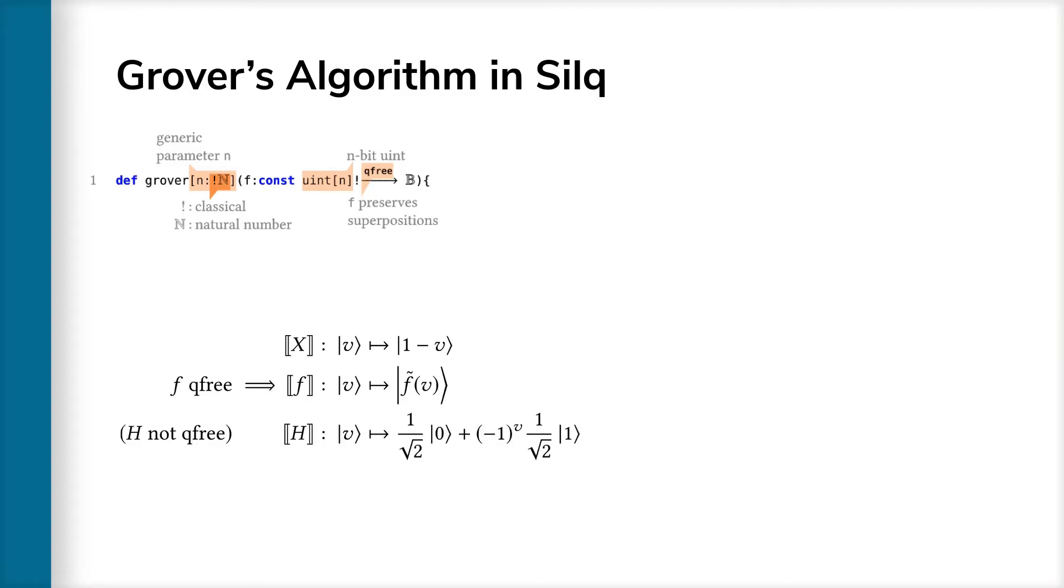As an example of a non-q-free function, we quickly show the Hadamard operation h, which is more complex and cannot be described using a function f tilde. As we can see, the output of h is a linear combination of ket 0 and ket 1, often referred to as superposition. In general, all quantum operations we have just discussed can be linearly generalized to such linear combinations, as we show on the right-hand side. The only difference to the left-hand side is a sum over all possible values and a complex coefficient, gamma v.